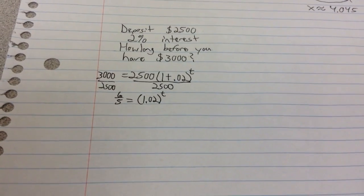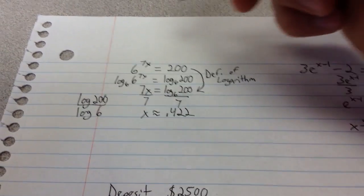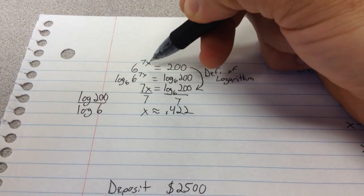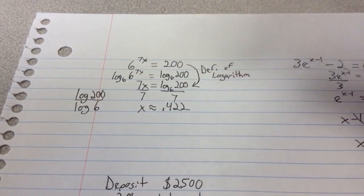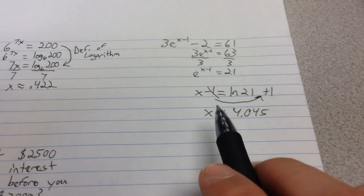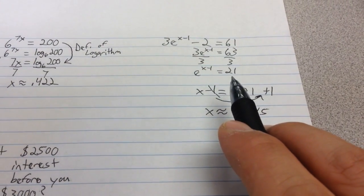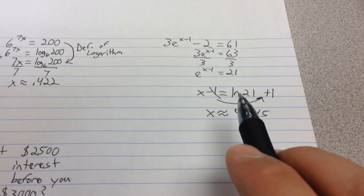But then what I want to do is I want to do the exact same thing that I did up here. When I had this base raised to this exponent equals this number, I put my logarithmic form using my definition of a logarithm. Same thing here. This base raised to this exponent equals this number using my logarithmic form.